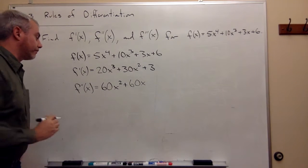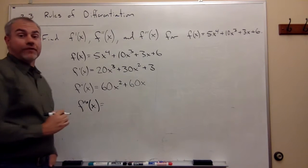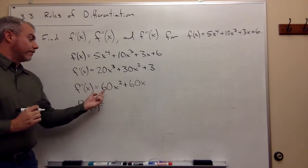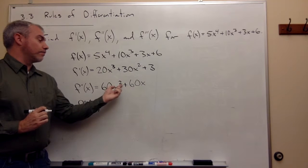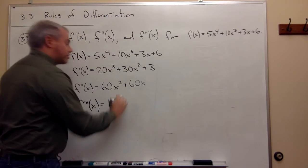That's the second derivative. The third derivative, f triple prime of x, is just the derivative of the second derivative. The derivative of 60x squared, bring down the 2, I get 120x to the first,